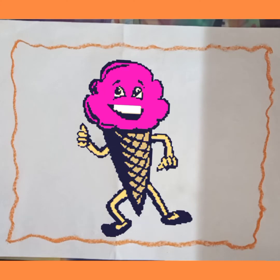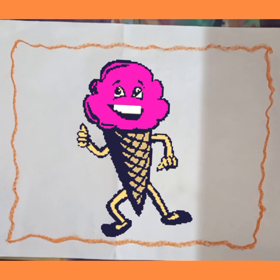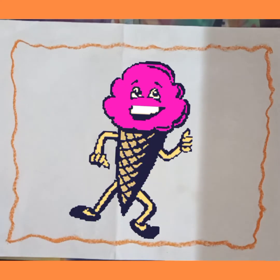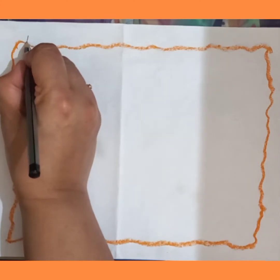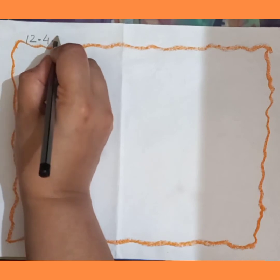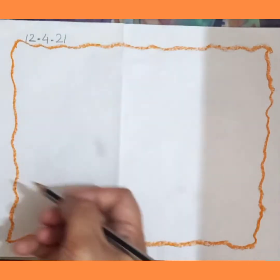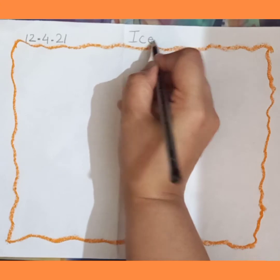So quickly take out your drawing book. The ones who haven't purchased a drawing book yet, please do buy your book. As you know, we need to write the date and maintain a proper record. First we are going to draw an outline with any color, and then we are going to write down the date: 12.4.21.